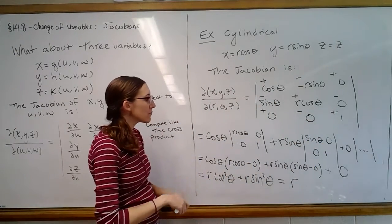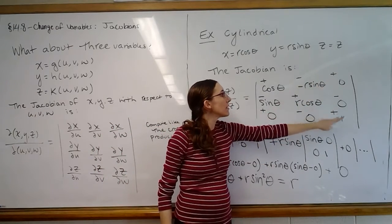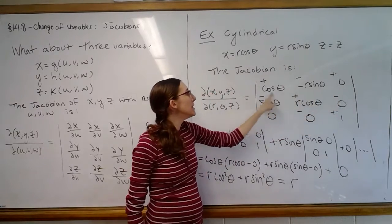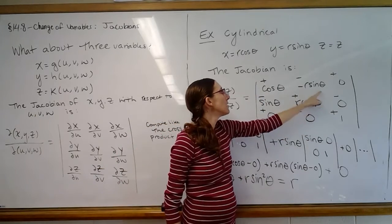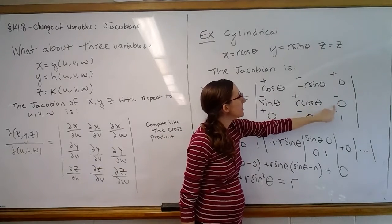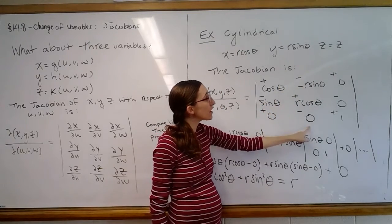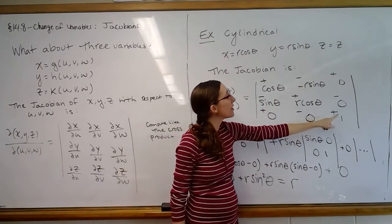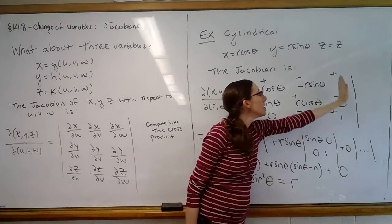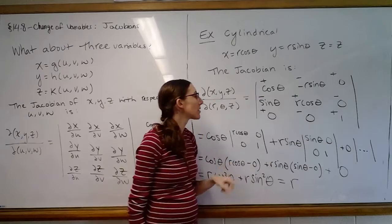So for instance, we could have, if we wanted with this last one, used like the last column. So we would have zero times this determinant, because we would cross off its row and column, minus zero times the determinant with cosine theta, negative r sine theta, zero, zero. And then we would have plus one times the determinant - we'd cross off its row and column. So we'd be left with cosine theta, negative r sine theta, sine theta, r cosine theta.